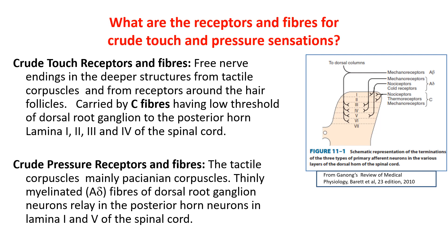Crude touch is carried by unmyelinated C fibers. These are mechanosensors and they are low-threshold fibers. They are carried by the dorsal root ganglion to the posterior horn and relayed in laminae 1 to 4 of the dorsal horn, and some texts mention relay in laminae 5, 6, 7, and 8 of the spinal cord.